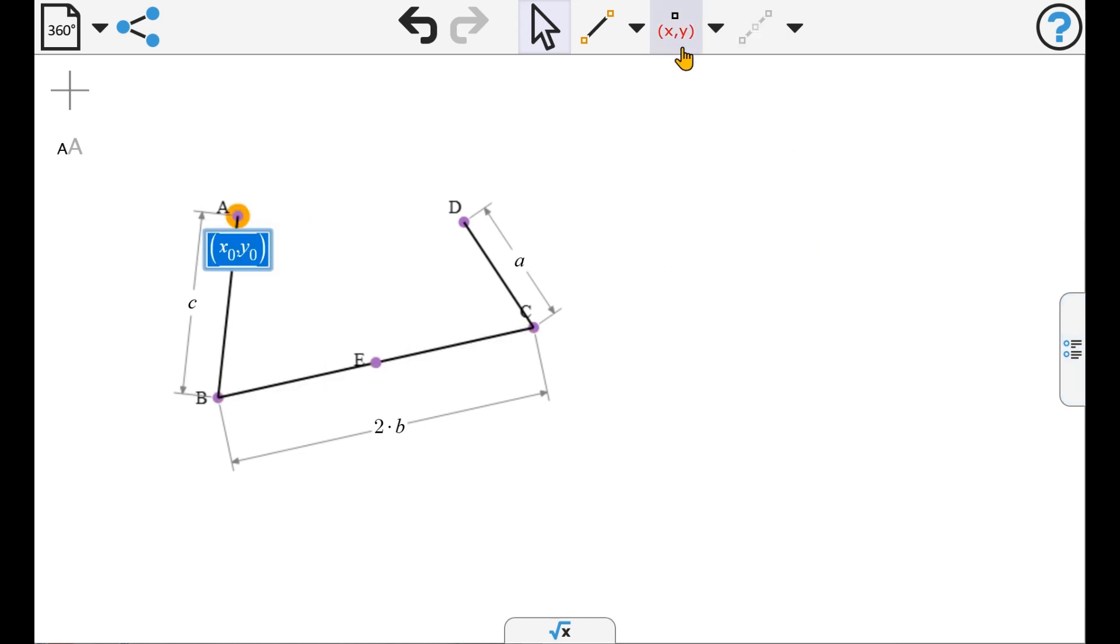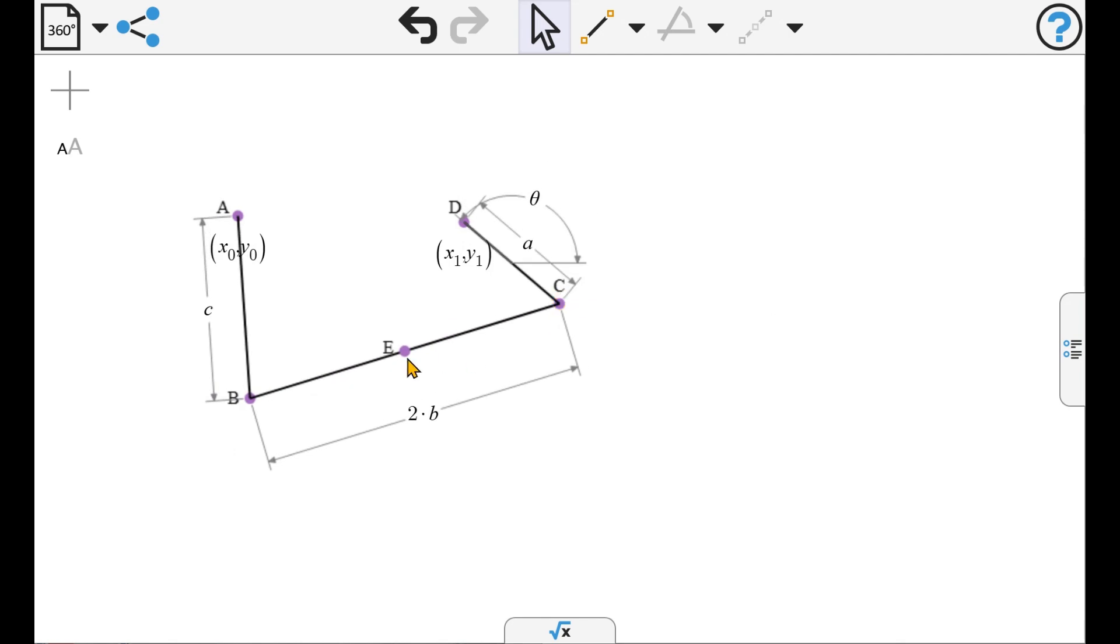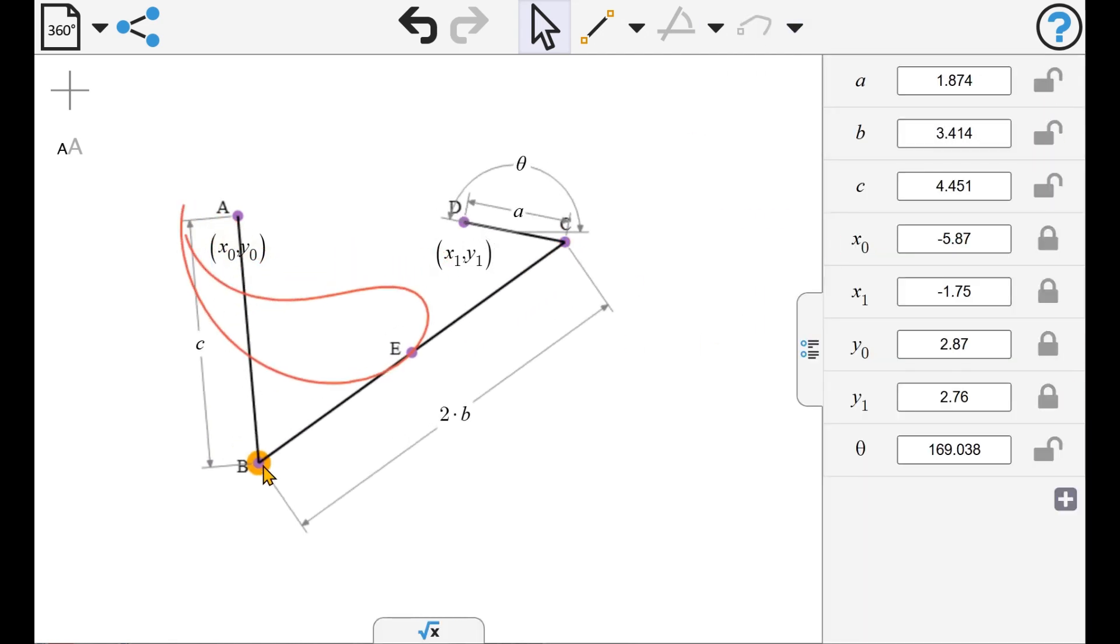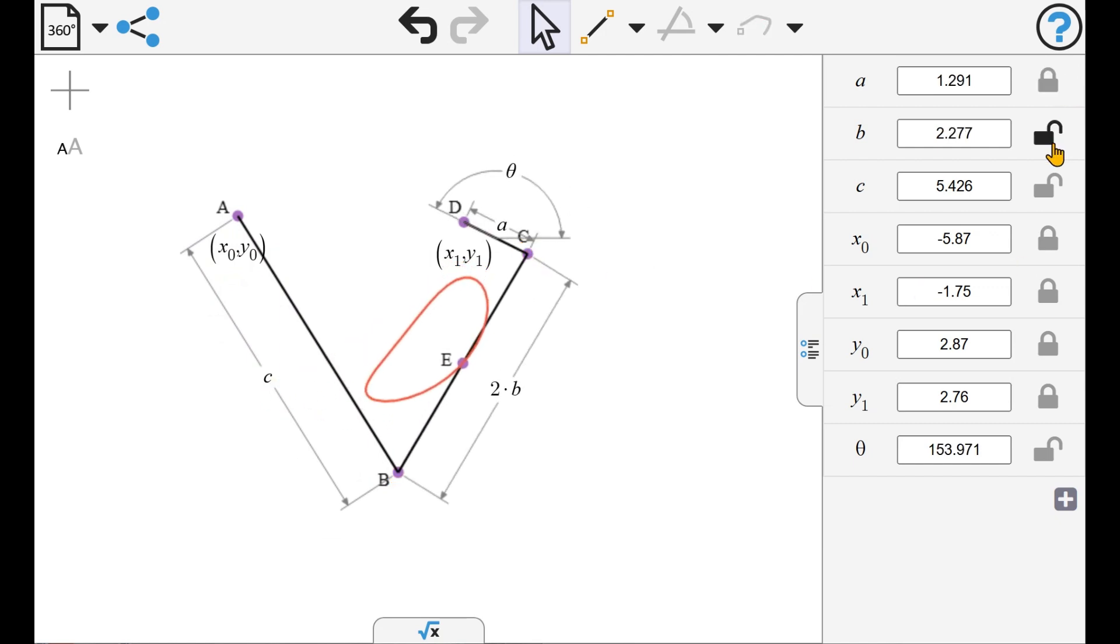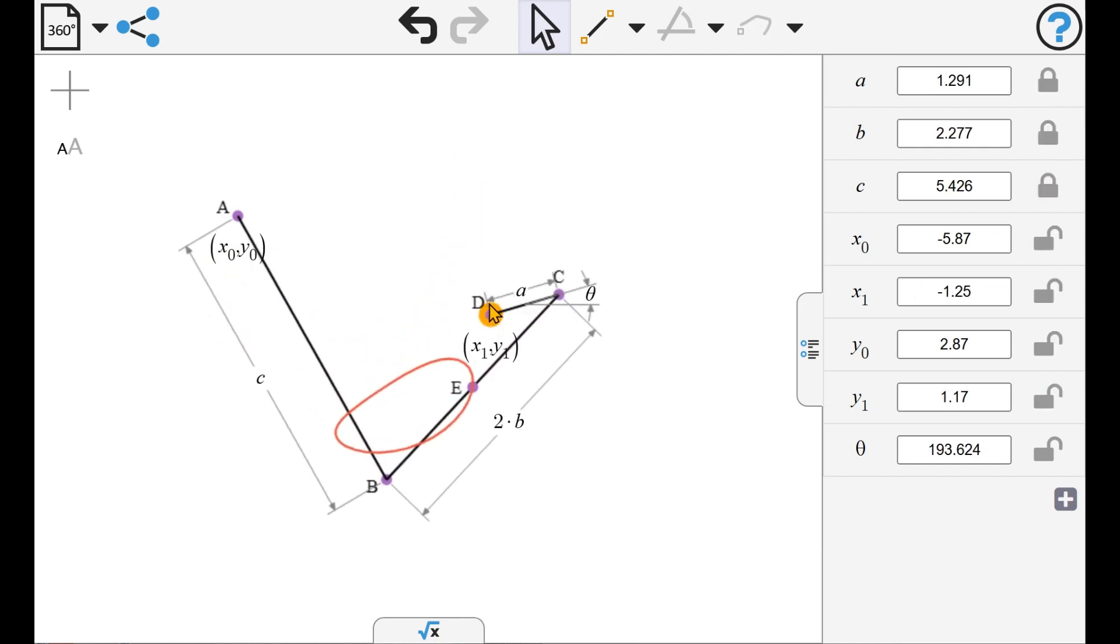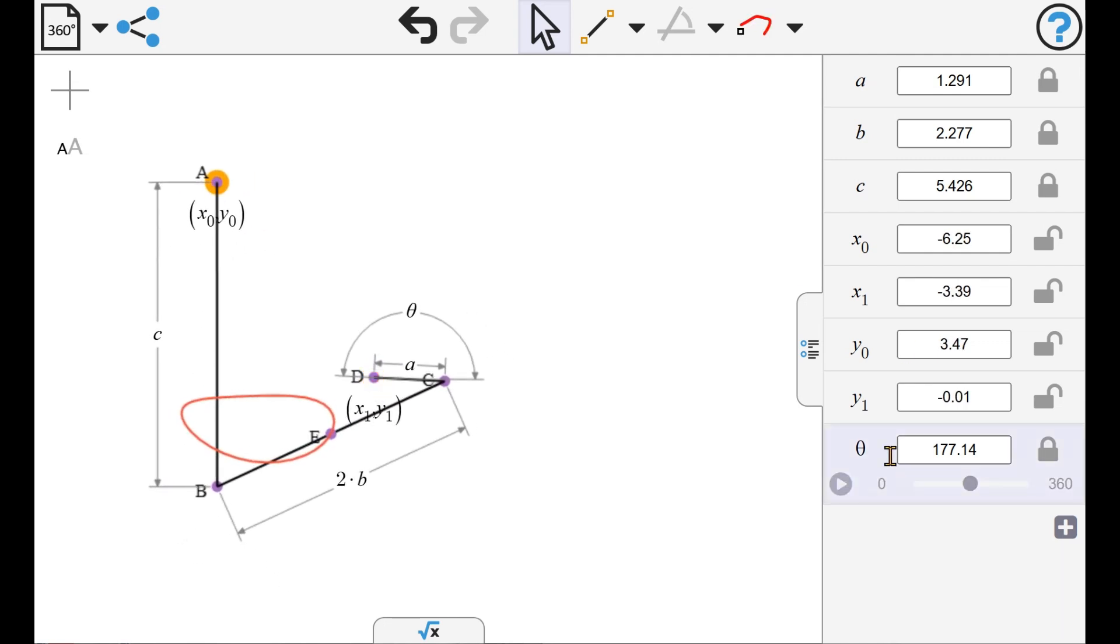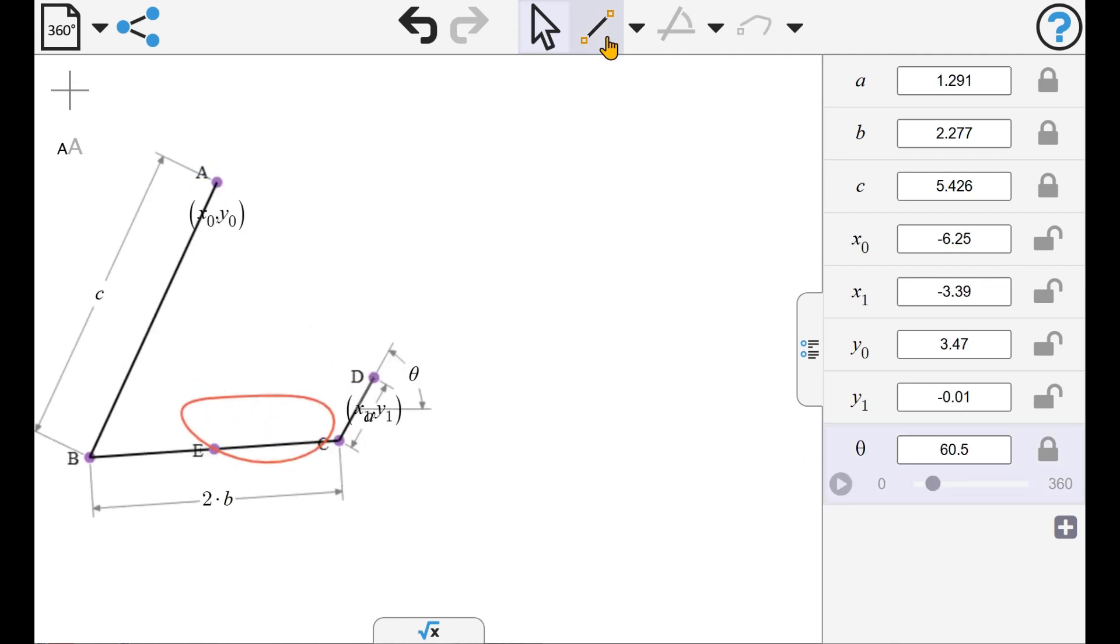So here we'll design our four-bar linkage and have a look at the coupler curve of that point A. By modifying the parameters, we can get a flat bit on our coupler curve. By moving other parameters around, we can make that flat bit horizontal.